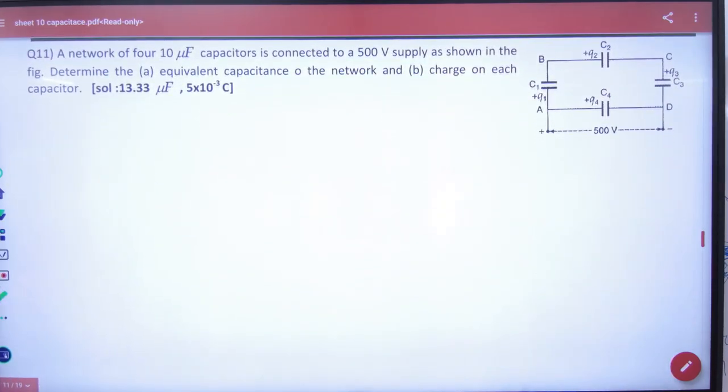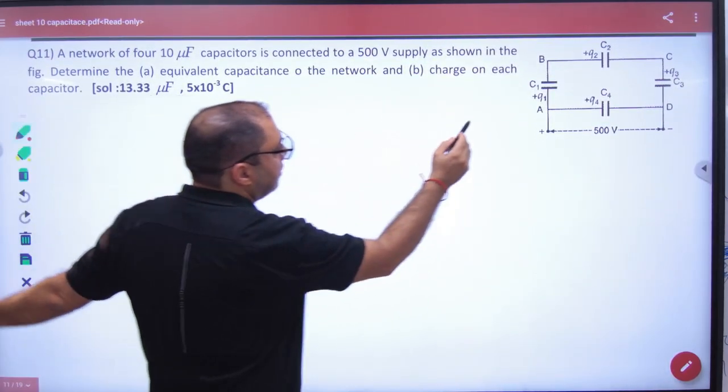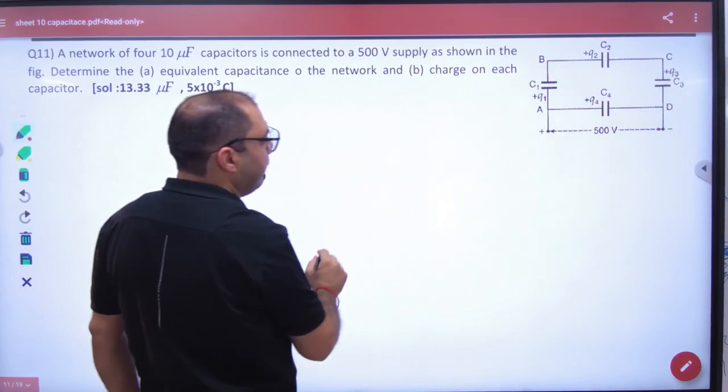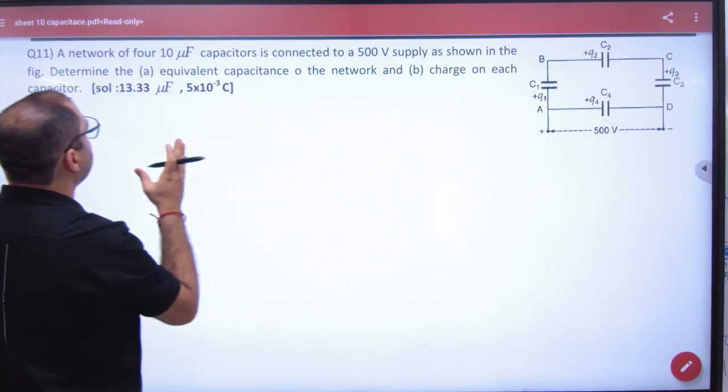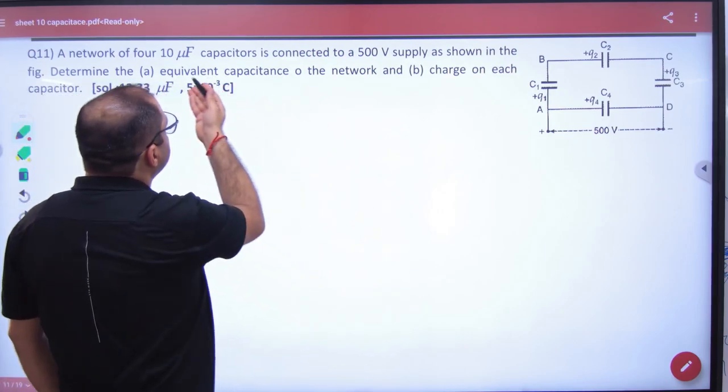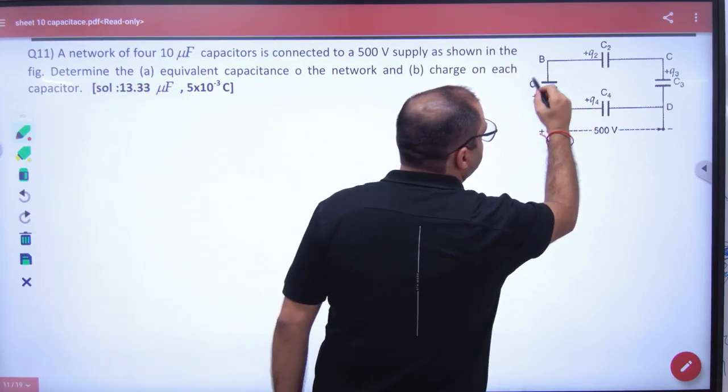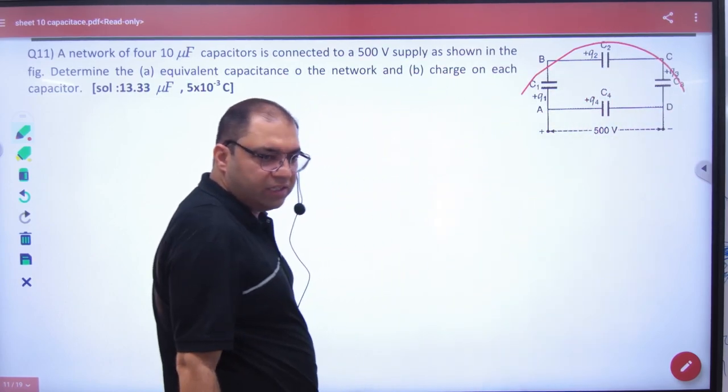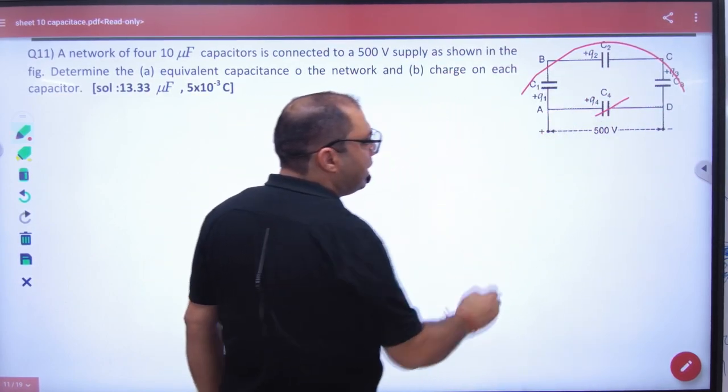In this question, you have 4 capacitors. It has a battery of 500 volts. Equivalent capacitors. So, look. All of these are 10 microfarad. These are 3 connected in the series. The answer will come in parallel.